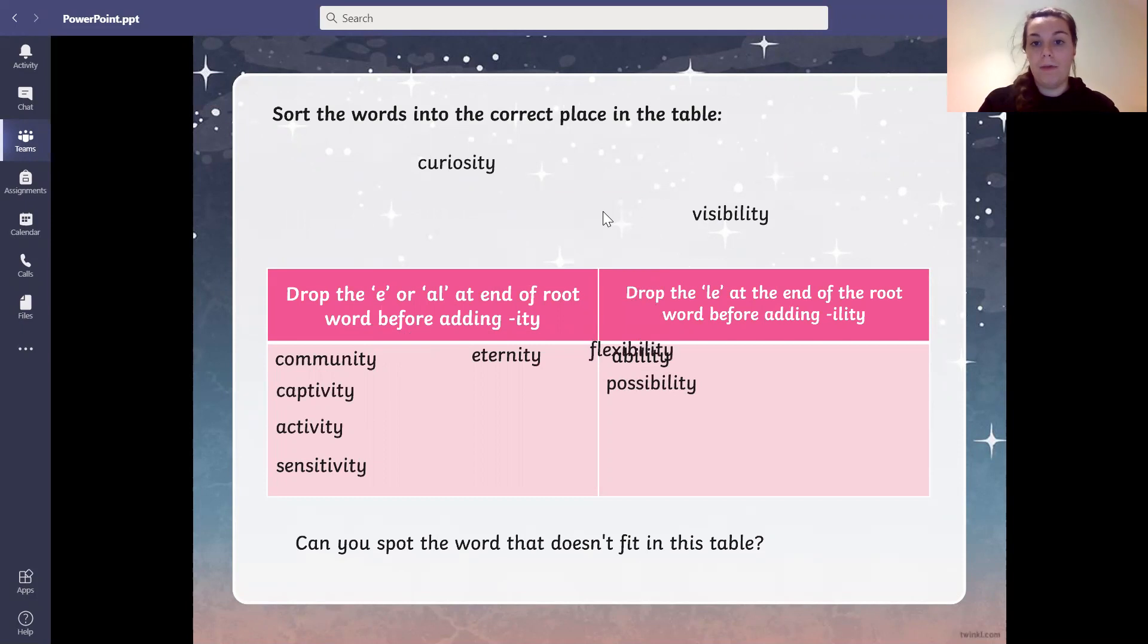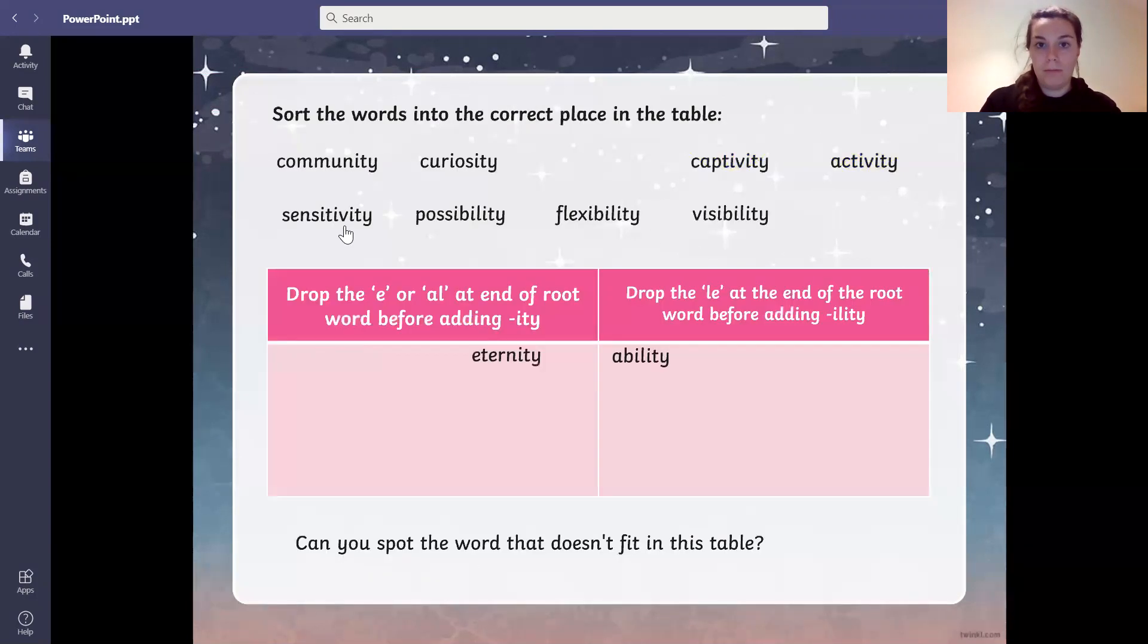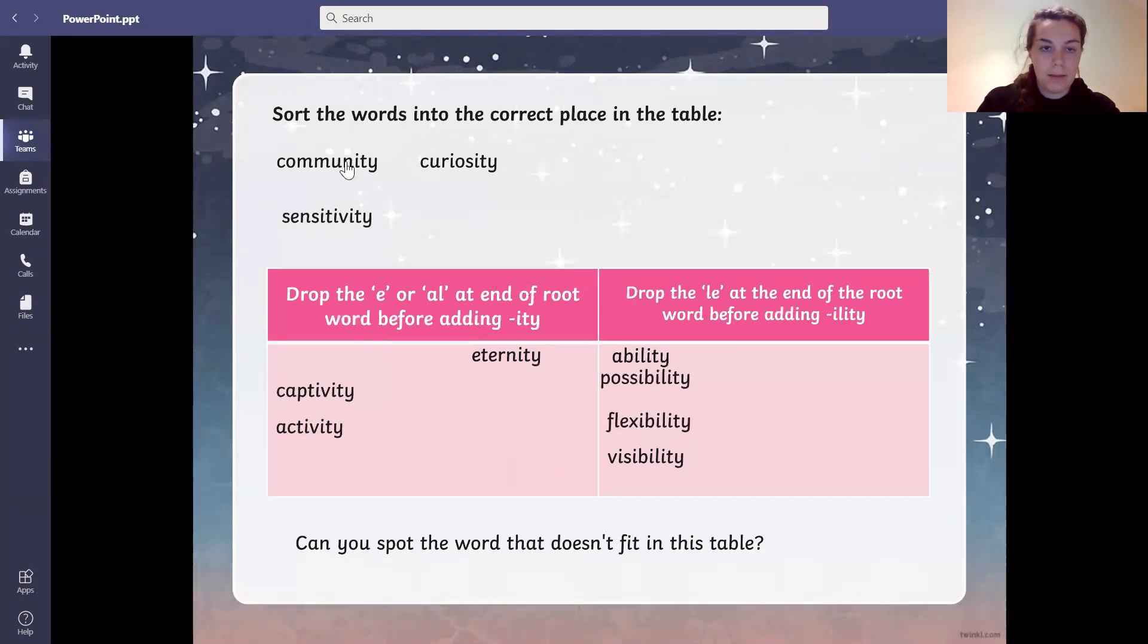Flexibility, we drop the al, flexible. And visibility, we drop the al for visible. Sorry, they've all just gone off. Let's see if I can quickly drop them back.